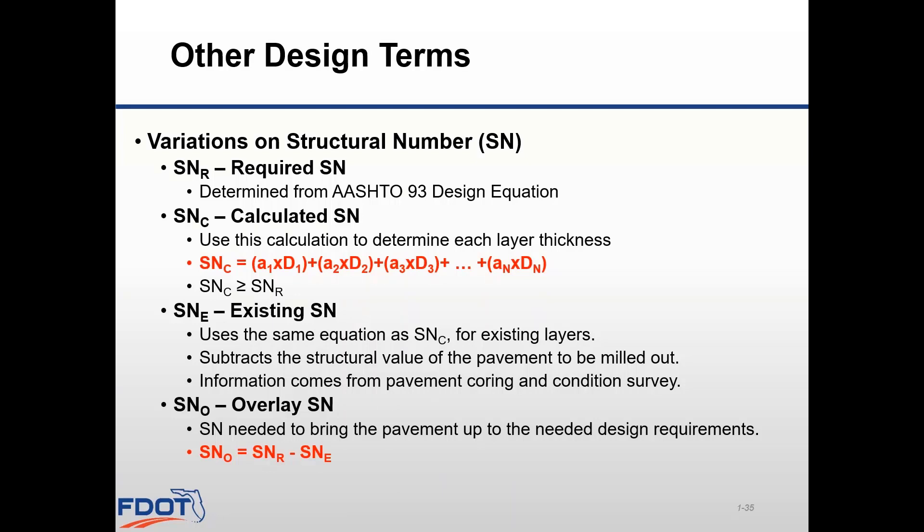There are a few different variations of the structural number. There is the required structural number, denoted with subscript R, calculated using the 1993 AASHTO design equation based on the resilient modulus, reliability, and design ESALs. We then need to translate that into layers of asphalt, base material, and stabilization using the calculated structural number, denoted with subscript C, which is the sum of our layer thicknesses multiplied by their layer coefficients. This equation needs to be greater than or equal to our required structural number. We also have the existing structural number, subscript E, which is the structural number of the existing pavement at the time of resurfacing, calculated by getting existing pavement core and condition information from the materials office.